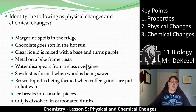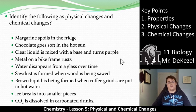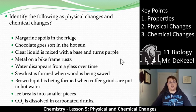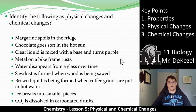Let's practice a little bit. I would encourage you to pause here and do these on your own, but I'm going to do them here as well so you can check. Margarine spoils in the fridge — that would be a chemical change because it is turning into something different; you're getting mold and something else in there. If chocolate goes soft in the hot sun, chocolate is still chocolate even if it's soft, so that would be a physical change. A clear liquid is mixed with a base and it turns purple — that sounds like a chemical change; we have a color change, so its properties are different. Metal on a bike frame rusts — that means we have a chemical change; we talked about rust previously.